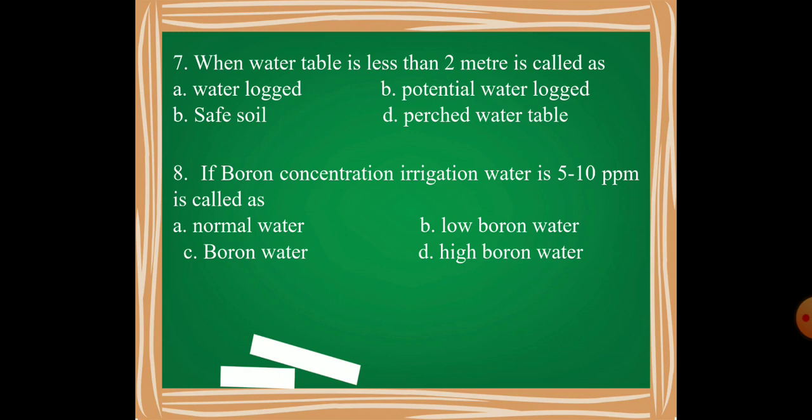Then, if boron concentration, this is the eighth one, if boron concentration of irrigation water lies between 5 to 10 ppm, then it is called as normal water, low boron water, boron water, or high boron water?